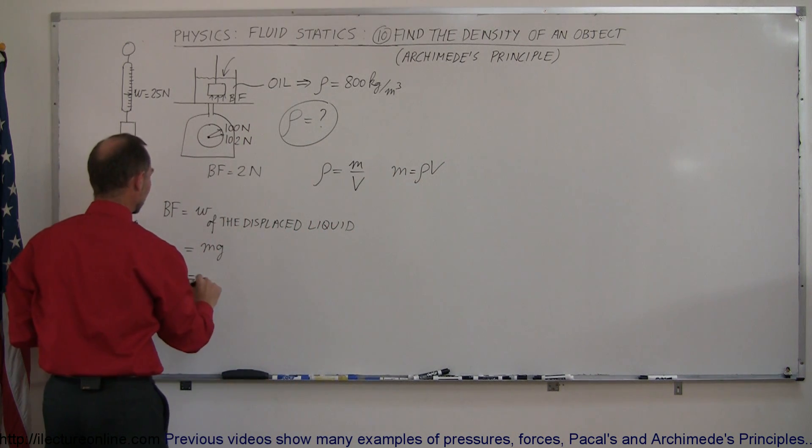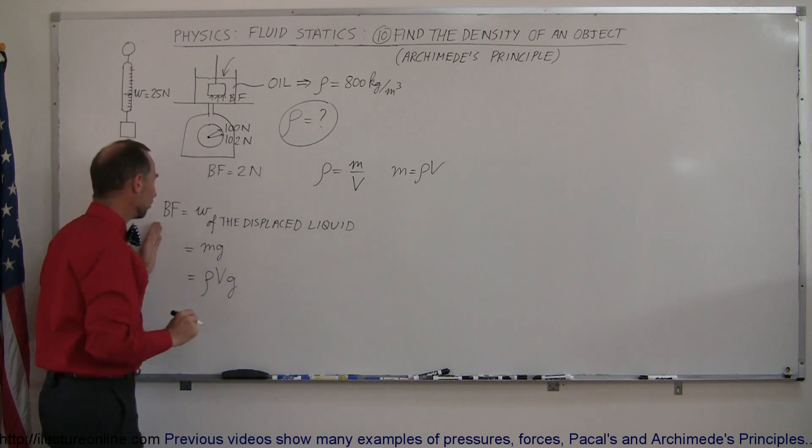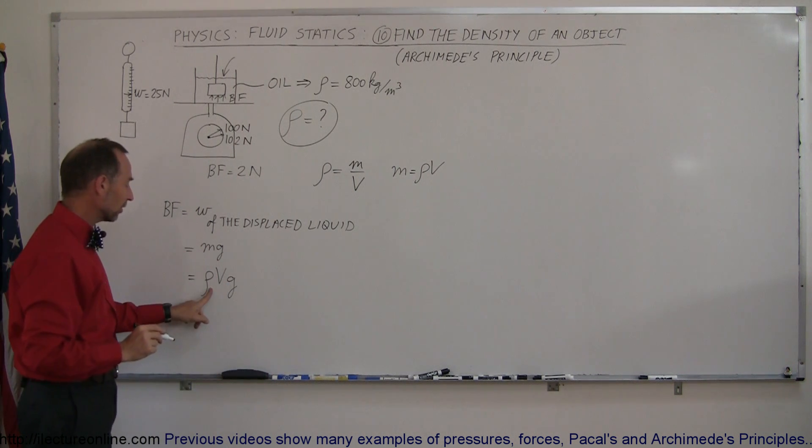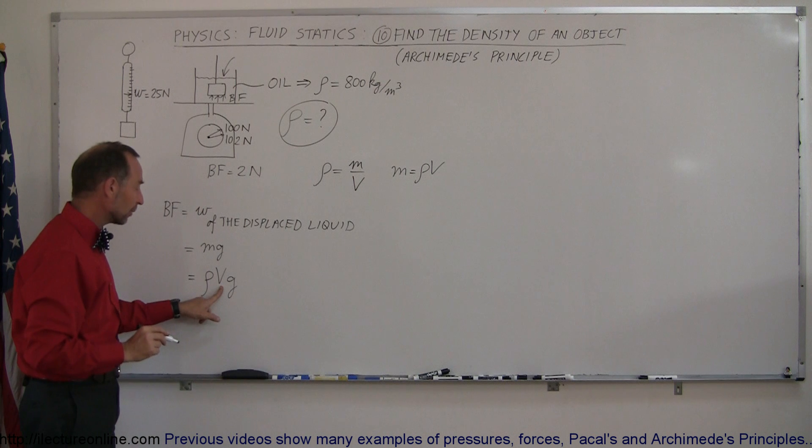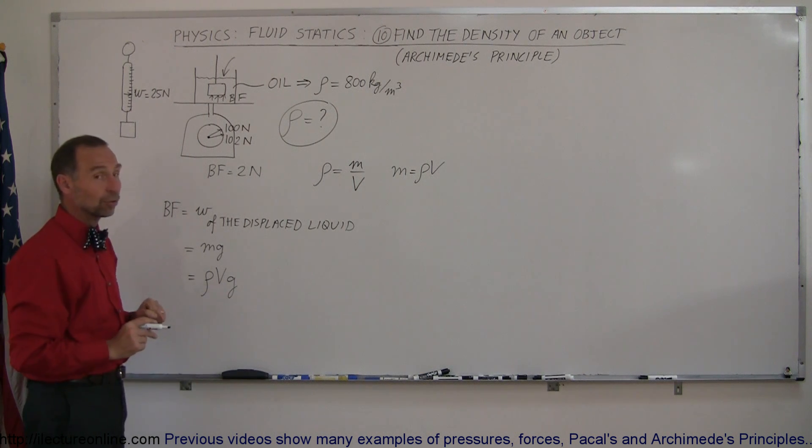Plug that in here, and so this is equal to the density times the volume times g. So the buoyancy force is equal to the density of the displaced liquid, the volume of the displaced liquid times acceleration due to gravity.